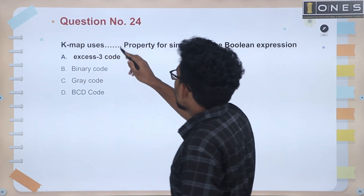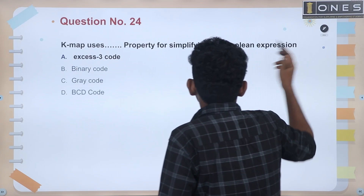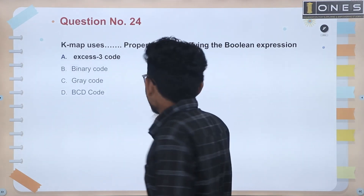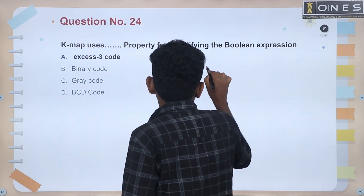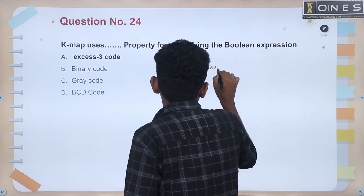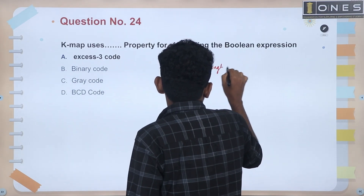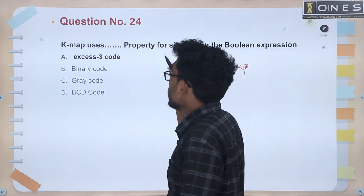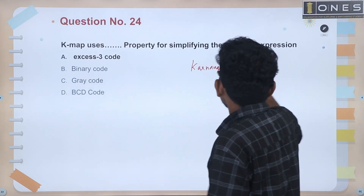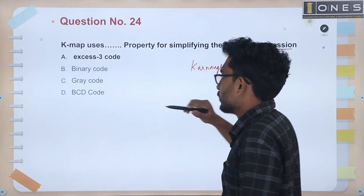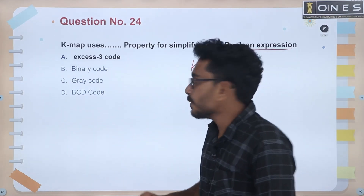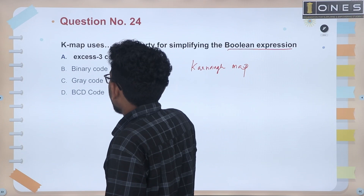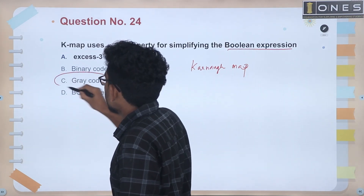Next question: Kmap uses which property for simplifying the Boolean expression? Kmap is a Karnaugh map. This Karnaugh map uses a specific property to simplify Boolean expressions.